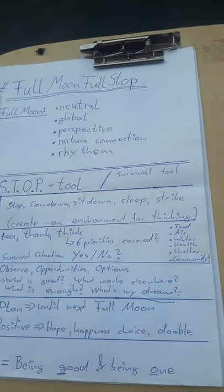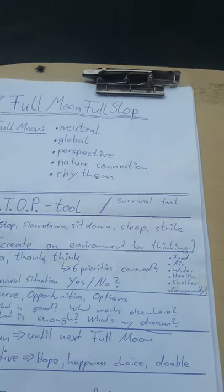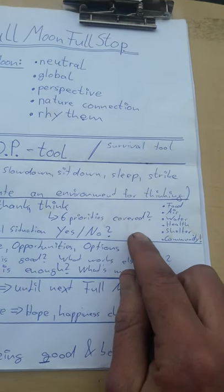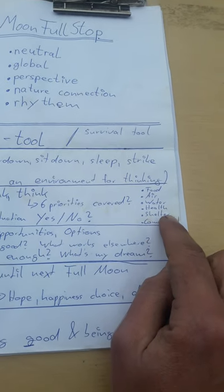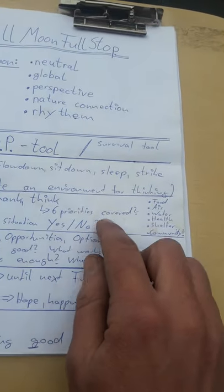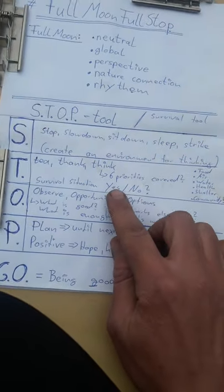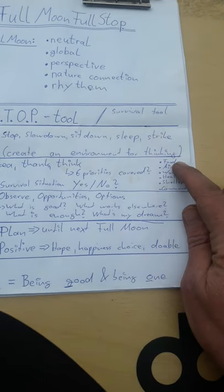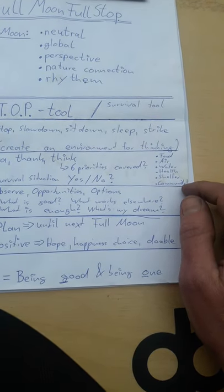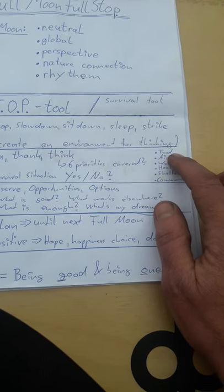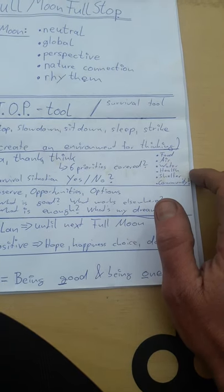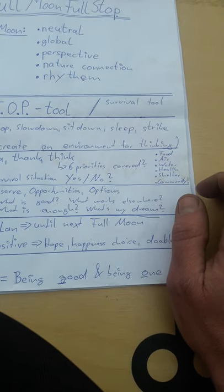T is about thinking about the six survival priorities. We qualify for being in a survival situation when one or more of the six survival priorities are not sustainably or sufficiently covered. The big question in the T section is: survival situation — yes or no? The six survival priorities are food, air, water, health, shelter, and community. For example, food: we might feel that the energy input-output of our food is really good — that we invest less energy getting food to our table than what we get back from eating it.